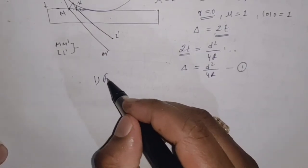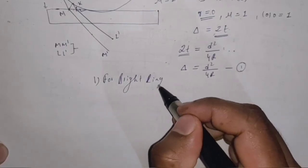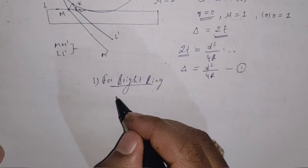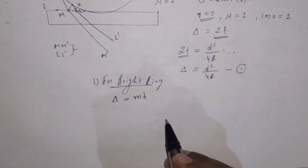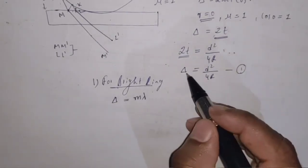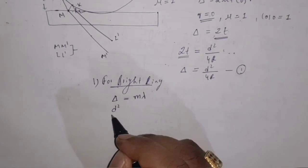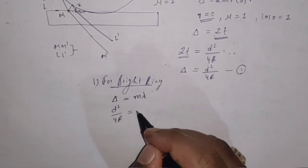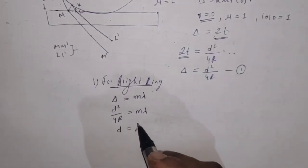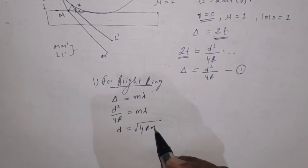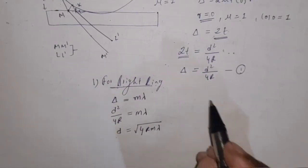For bright rings in the case of transmitted light, the path difference is given by delta equals m lambda. Substituting delta from equation 1, we get D squared divided by 4R equals m lambda, or equivalently D equals the square root of 4Rm lambda. This is the diameter of a bright ring in the case of transmitted light.